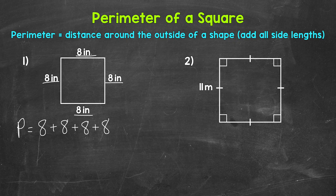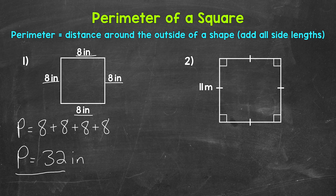8 plus 8 is 16, plus 8 is 24, plus 8 is 32. So the perimeter is 32 inches. That's the distance around the outside of that square.